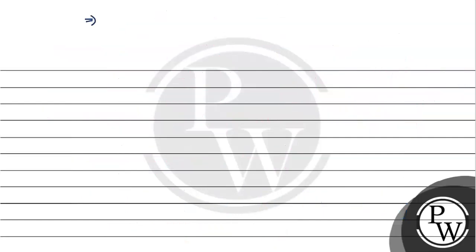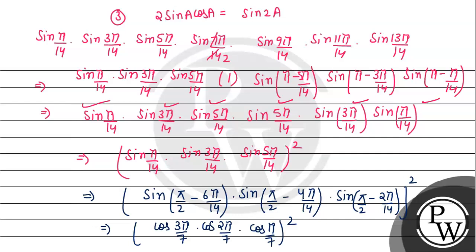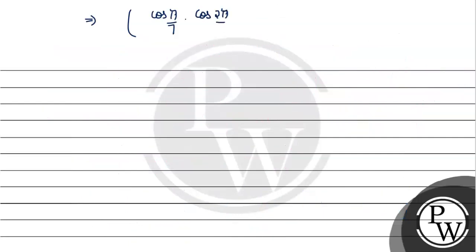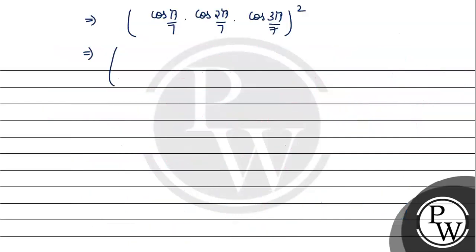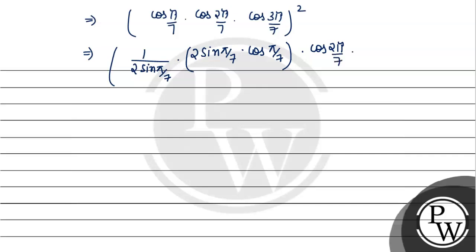We now have [cos(π/7) · cos(2π/7) · cos(3π/7)]². To evaluate this, we use the identity 2 sin A cos A = sin 2A. We multiply and divide by 2 sin(π/7), giving (1/2) · [sin(π/7) · cos(π/7)] · cos(2π/7) · cos(3π/7) / sin(π/7), which simplifies to (1/2) · sin(2π/7) · cos(2π/7) · cos(3π/7) / sin(π/7).